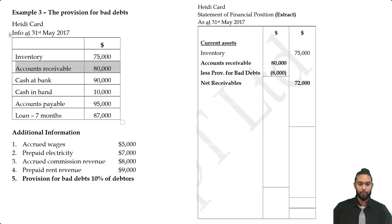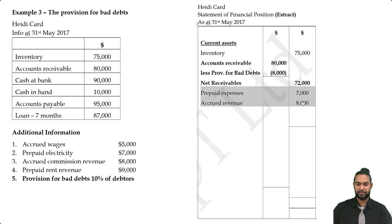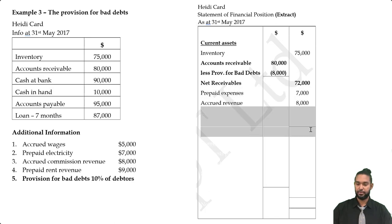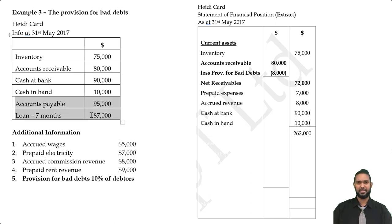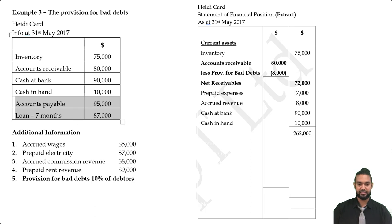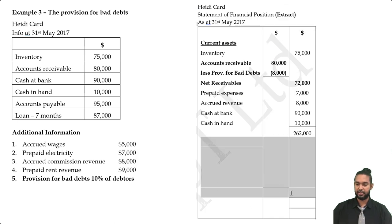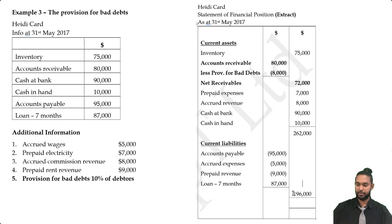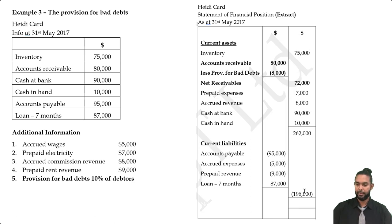Current liabilities stay the same: accounts payable, loan for seven months, accrued wages, and prepaid rent revenue — all go in this section with a subtotal. Subtracting gives us net working capital of $66,000. The reason we show the provision working in a separate column is to avoid double-counting — if you showed the net receivables figure inline, readers might add it again. For CSEC exams, always show the provision for bad debts working so the examiner can see you know how to present it.